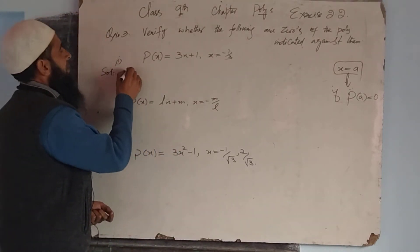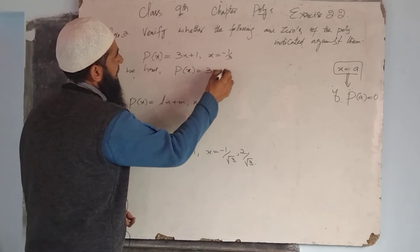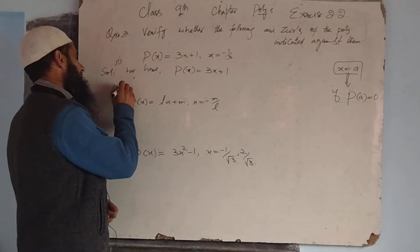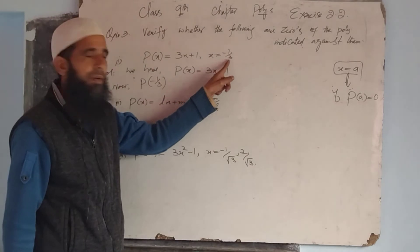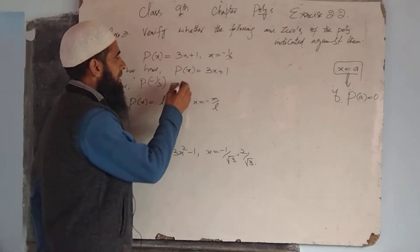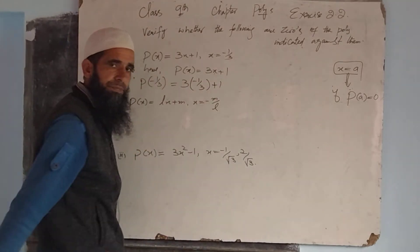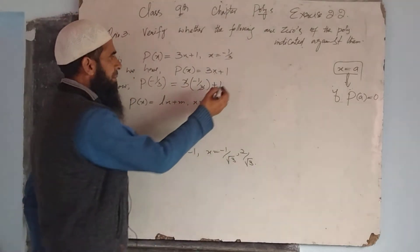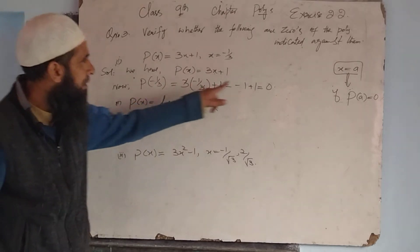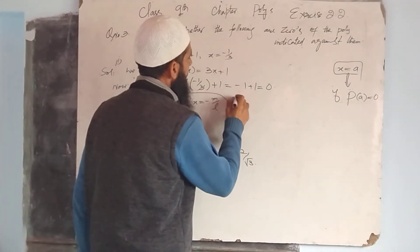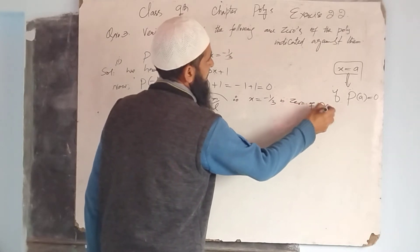Solution, first part: we have P(x) = 3x + 1. Now P(-1/3) — replace X by -1/3 — equals 3 × (-1/3) + 1. The 3s cancel, giving -1 + 1, which equals zero. Therefore, x = -1/3 is a zero of P(x).